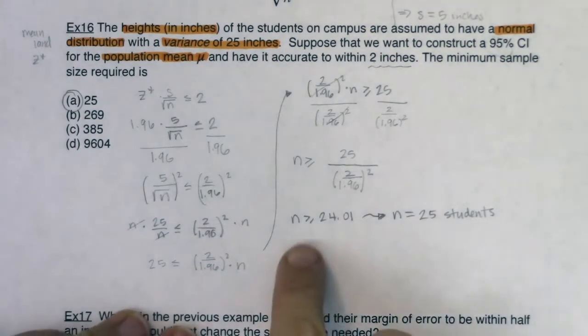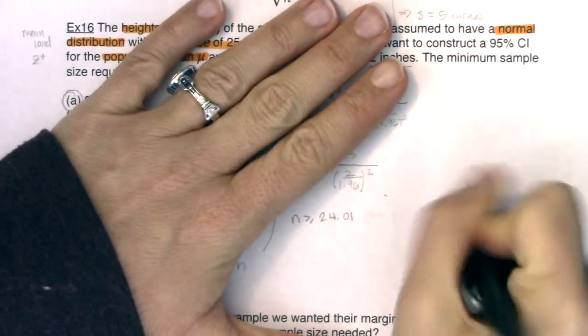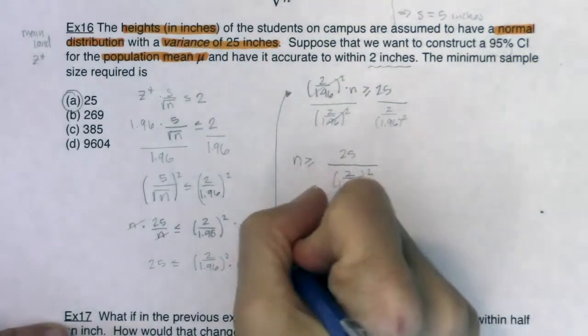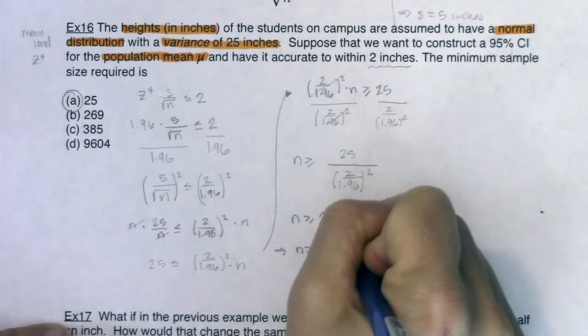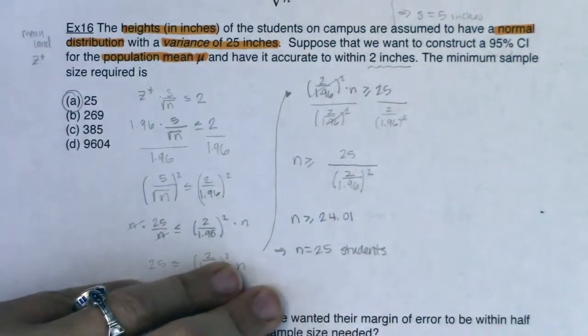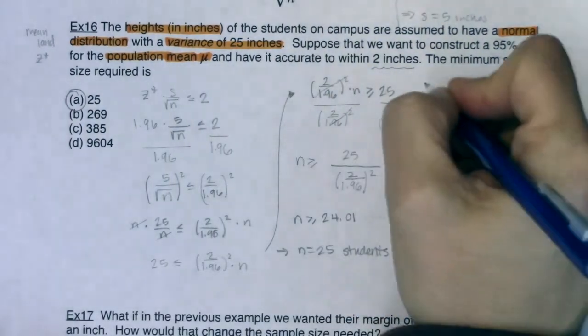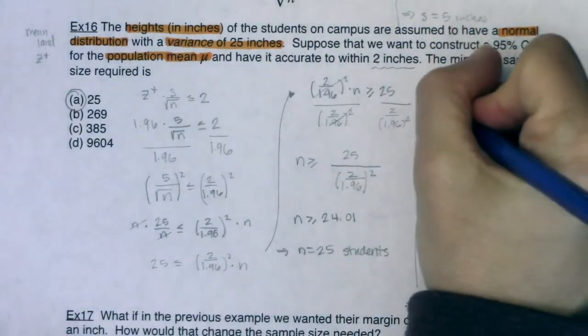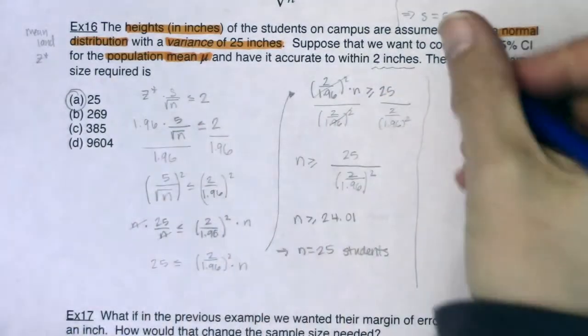Actually, I'm going to put this down here just so I have a little space to show you the formula. Let me rewrite this and say that implies n has to equal 25 students. And some of us tend to not like all that algebra. I mean, I personally do, but I'm a math teacher. So I dig all of that stuff. So I want to just show you the formulaic way to do this.